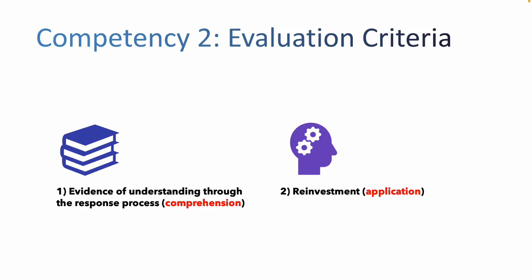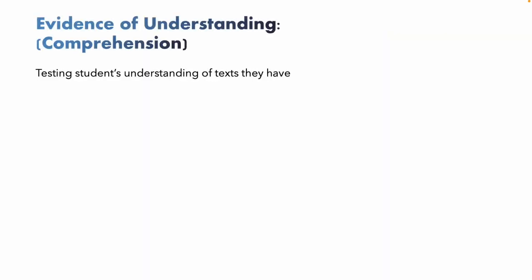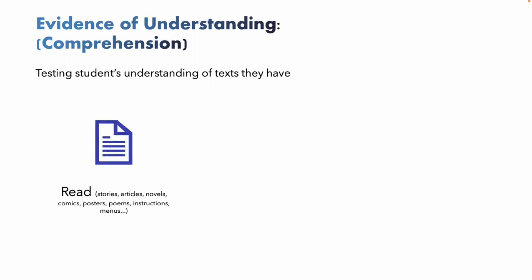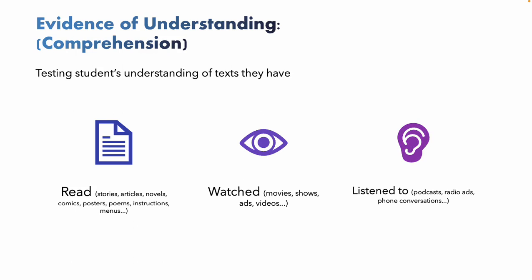We're going to focus on evidence of understanding first. I want to emphasize that we are not just limited to reading a short story or an information text — we're reading stories, news articles, magazine articles, novels, comics, posters, poems, instructions, menus — essentially any written English language text. This also includes media texts they're watching, like movies, shows, ads, videos, TikTok videos, and YouTube shorts. And of course auditory texts they listen to, such as podcasts, radio ads, and phone conversations.